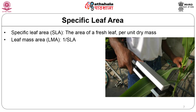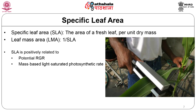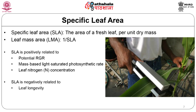Specific leaf area (SLA) is the area of a fresh leaf divided by its dry mass, and SLA is positively correlated to potential RGR across species. SLA correlates positively to the mass-based light-saturated photosynthetic rate and with leaf nitrogen concentration, and negatively to leaf longevity and carbon investment in secondary compounds such as tannins or lignin.